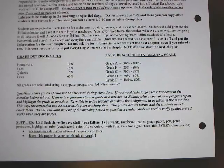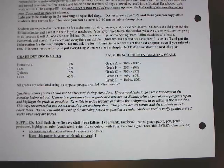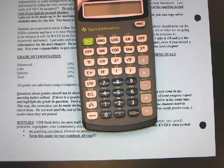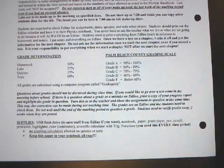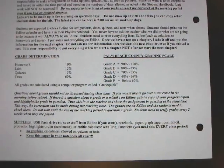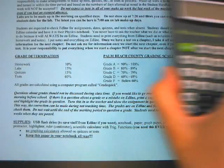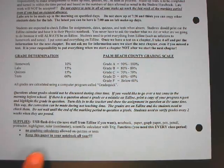For supplies, you need a notebook, paper, graph paper, a pen, a pencil, a protractor, a highlighter, a ruler, and a scientific calculator with trig functions — like the one you got in middle school. You are not allowed to use a graphing calculator on a test or a quiz. We have a class set of calculators that we pass out for every test and quiz. If you want to use your graphing calculator for homework that's fine, but you need to be familiar with the scientific calculator since that's what we use on every quiz and test. Make sure you keep this syllabus paper in your notebook all year long.